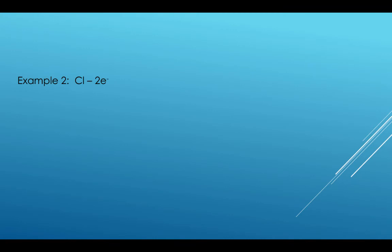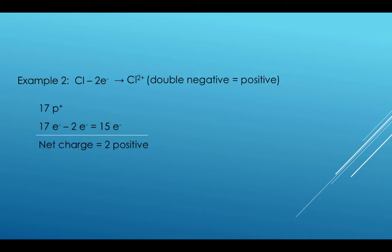This next example has neutral chlorine, removing two more from its orbital. 17 protons. 17 minus 2 makes 15 electrons. This results in more positive charges than negative charges. The net charge would be plus 2. This makes a chlorine ion with a charge of plus 2.